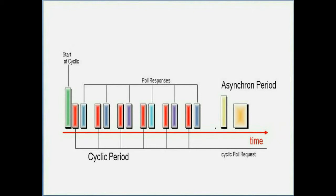Ethernet Powerlink implements a form of time-division multiplexing to eliminate CSMA/CD and achieve real-time performance. The Powerlink master sends a start-of-cycle frame to begin a cycle. The Powerlink slaves listen to this frame and synchronize themselves to communicate on the network.